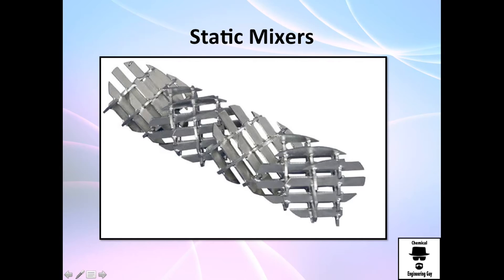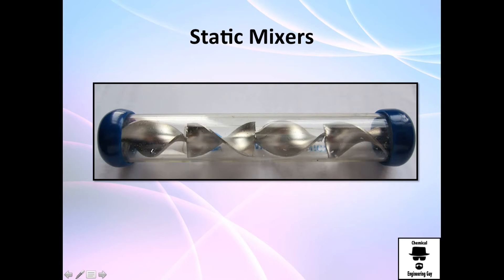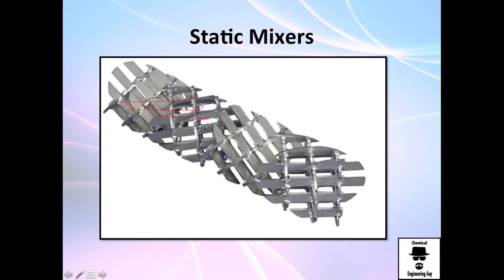This is another type, not that common but still useful. You have many ways. The previous design has only two paths, one-two, one-two. Here you have plenty of paths: one, two, three, four, five, six, seven. This is useful because you have small jets or beams mixing all together. When you have plenty of beams, it's easy to mix. The problem is when you have a very huge beam.